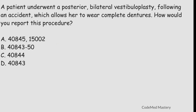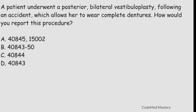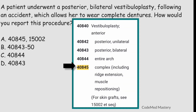Next question — and please support the channel by liking, sharing, and subscribing to Codement Mastery. A patient underwent a posterior bilateral vestibuloplasty following an accident, which allows her to wear complete dentures — how would you report this? Check option A: 40845 — vestibuloplasty complex, including rib extension and muscle repositioning. Option B: 40843 with modifier 50. Option C: 40844 — vestibuloplasty entire arch. Option D: 40843 — vestibuloplasty posterior bilateral.